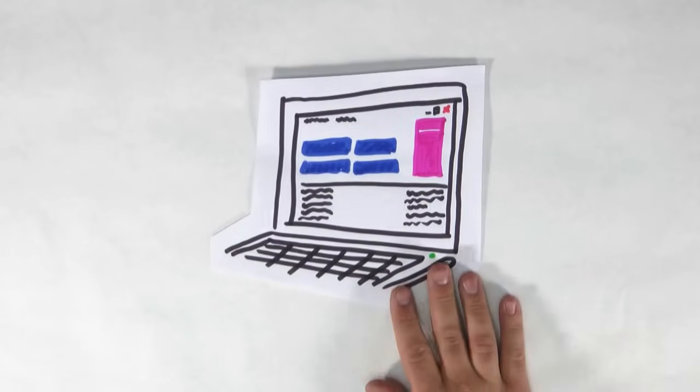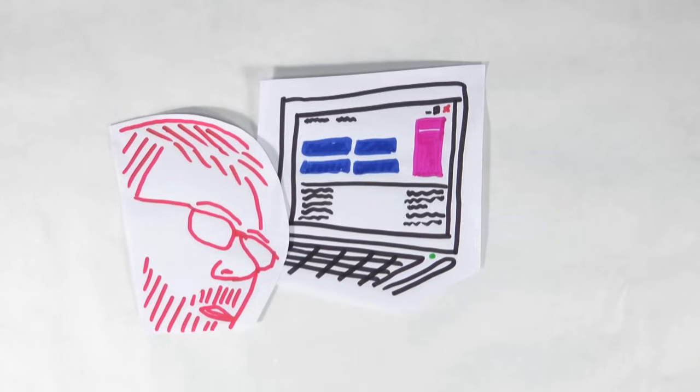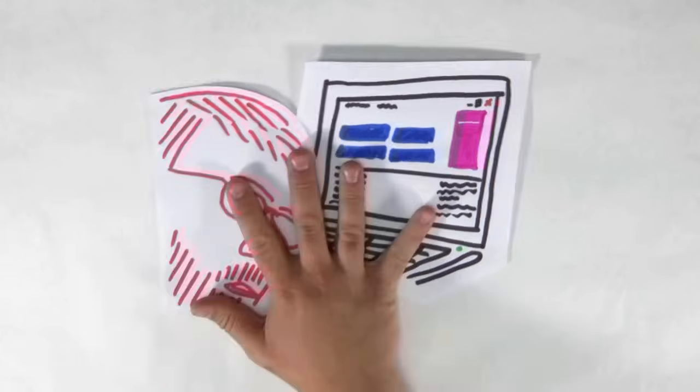On the web, anyone can create a website on any subject whether they are an authority or not. No one is policing the web. This makes it hard to find credible information, which is important when you're doing research.